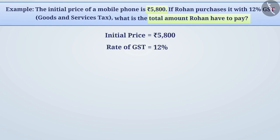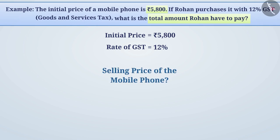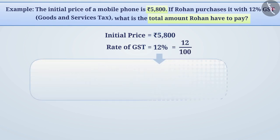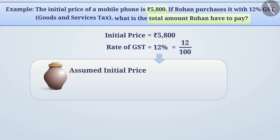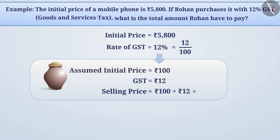That is, we have to find the selling price of the mobile phone. We know that 12% means 12 divided by 100. That is, if we consider the initial price of the item as 100 rupees, then GST will be 12 rupees. In this way, the selling price will be 100 rupees plus 12 rupees, equal to 112 rupees. When the initial price is 100 rupees, the selling price is 112 rupees.